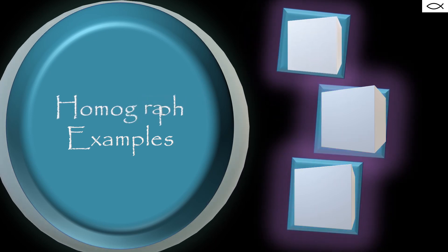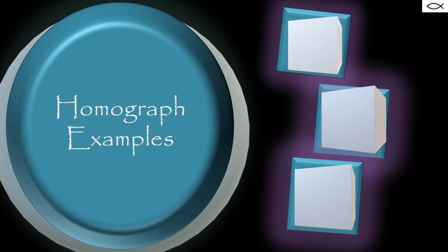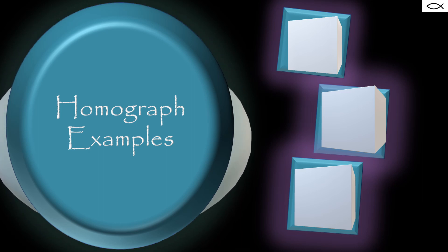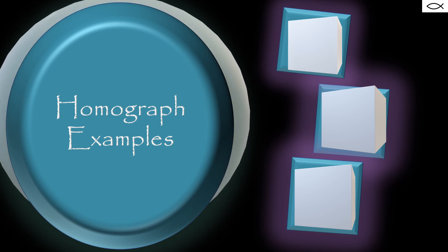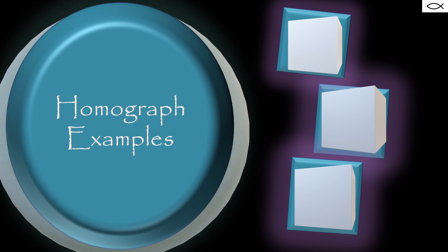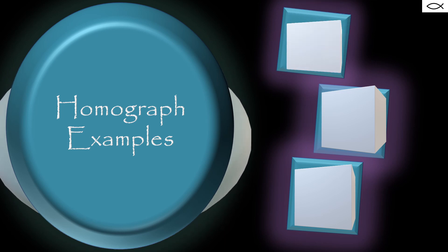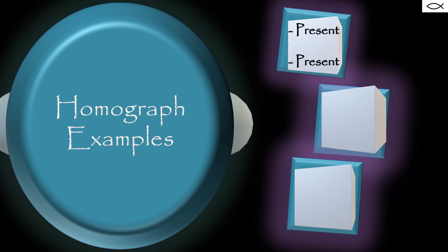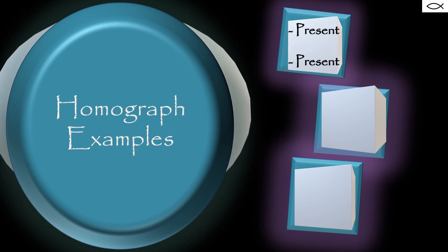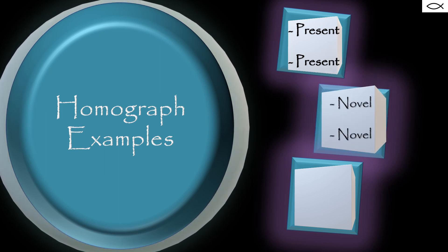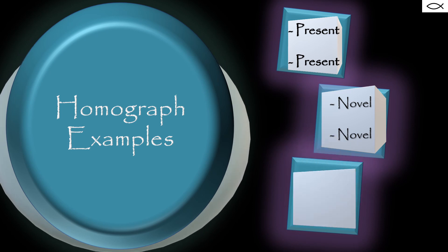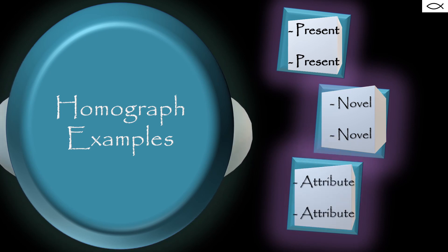Now let's look at some homograph examples. Remember, homographs have the same spelling, different meaning, and may or may not have the same pronunciation: present, present, present; novel and novel; attribute and attribute.